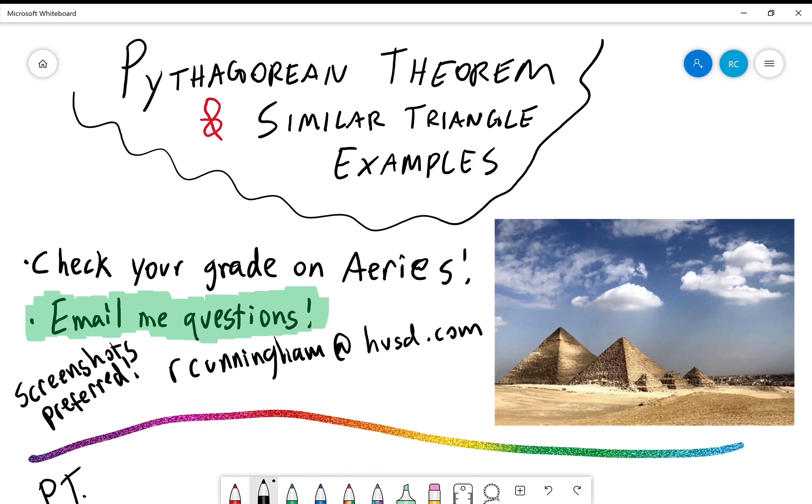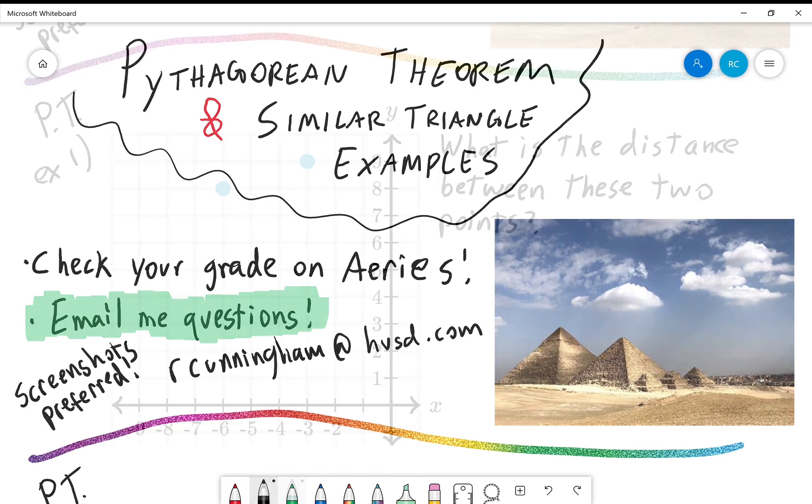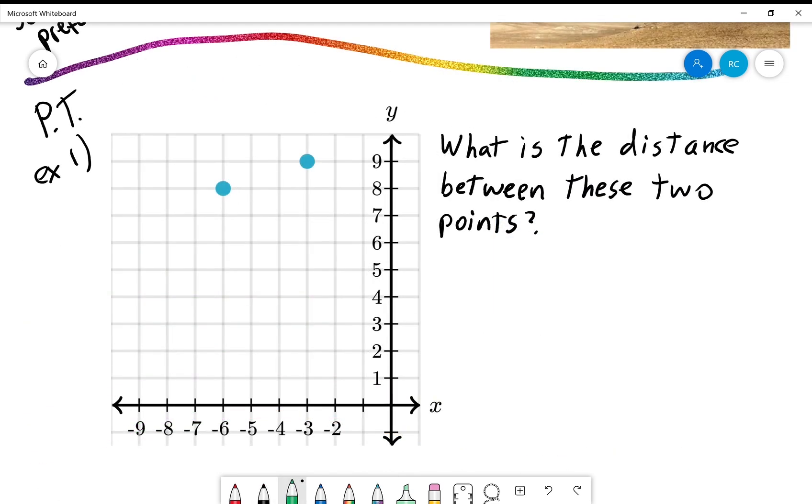Okay, moving right along, let's talk about the Pythagorean theorem. We've got three examples of Pythagorean theorem and one example of similar triangles and here we go. So here's the first Pythagorean theorem example. We have two points and we are to find what is the distance between these two points. So here is the distance we're looking for. I'm going to call it D for distance.